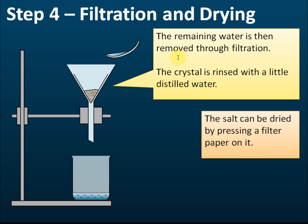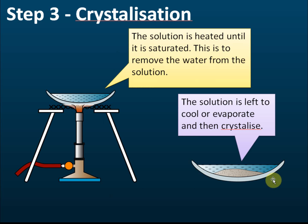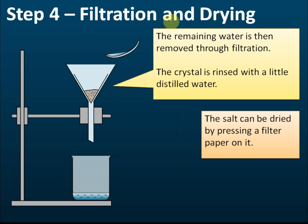After the solid salt forms, we proceed to step four — filtration and drying. Since there is still water present after crystallization, we separate the solid salt from the water through filtration. The salt is then rinsed with a little distilled water to remove unwanted surface impurities, pressed with a piece of filter paper to absorb remaining water, and then we get a dried solid salt.